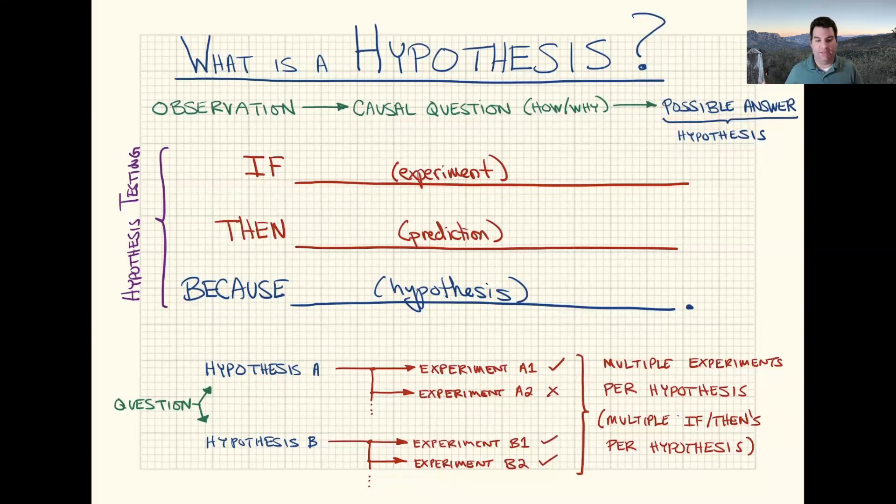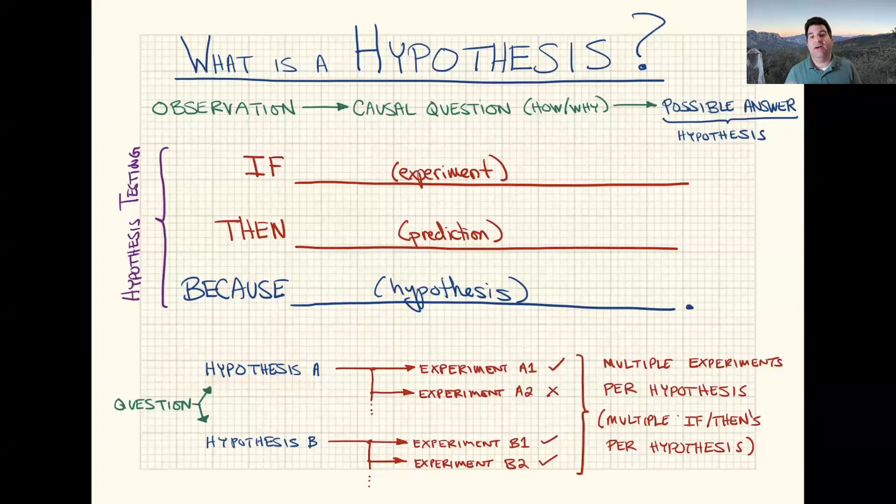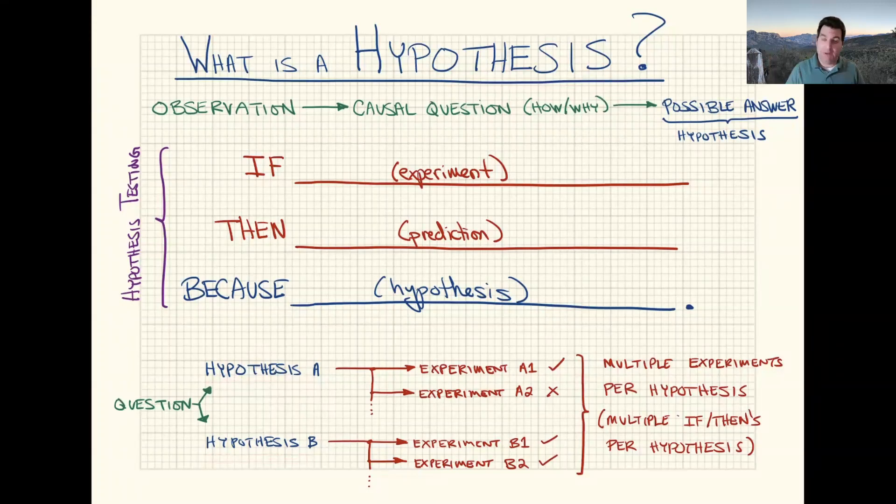So you can say hypothesis A might be that vitamin E is important to the immune system. Hypothesis B is that vitamin E is important for vision. Now, it's possible that both hypotheses are true simultaneously. You can have multiple functions. But it might be that one is true and the other one is false, or it might be that they're both false. But at that point, we don't know. We just have a list of possible answers.